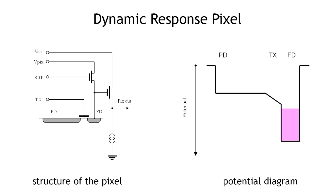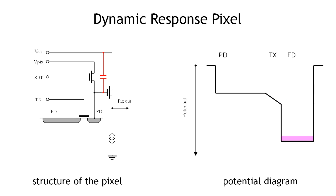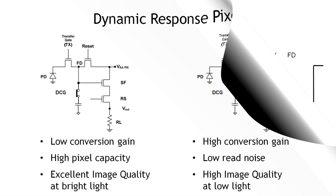The biggest point of optimization of the pixel is the capacitance of the floating diffusion node. When capacitance is small, the floating diffusion can handle a smaller amount of electrons, but sensitivity is higher and readout noise is smaller. When floating diffusion capacitance is large, it can handle a bigger amount of electrons — and that's how you provide good image quality at bright light conditions.